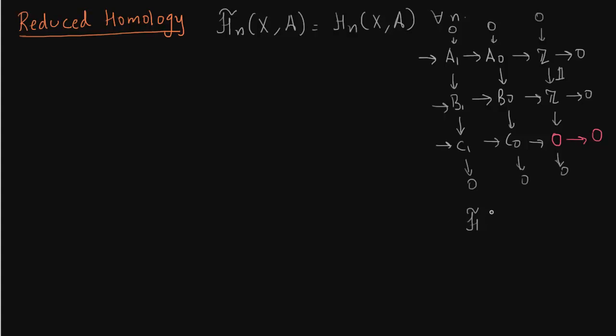Notice that we are always taking C as X, A. C is the chain complex associated with chain complex of X, A, that is C_n(X) modulo C_n(A). So that is the reason why we have this.